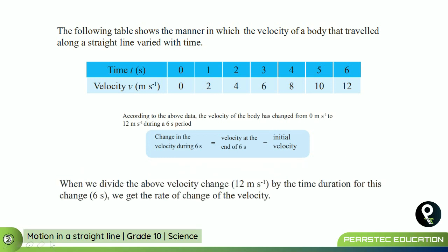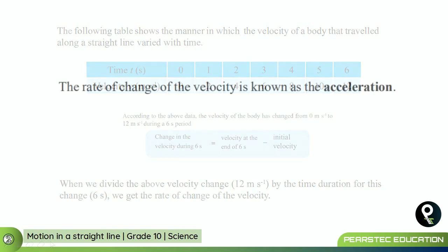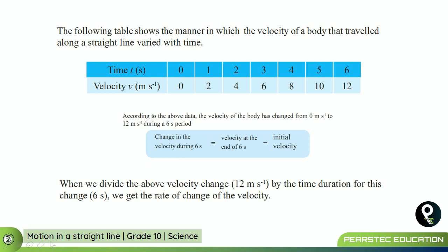When we divide the above velocity change of 12 meters per second by the time duration of 6 seconds, we get the rate of change of velocity. The rate of change of velocity is known as acceleration. So here, we divide the change in velocity — which is 12 minus 0 — by 6 seconds. That result is known as acceleration.